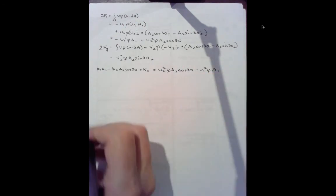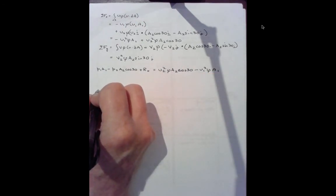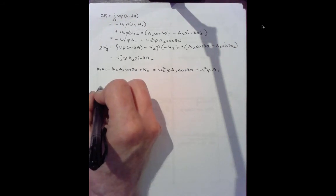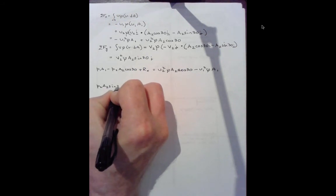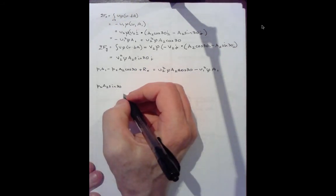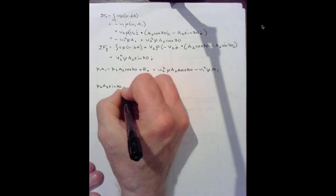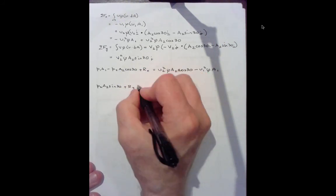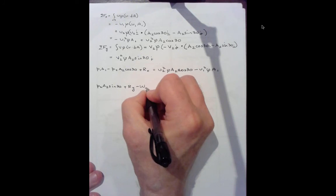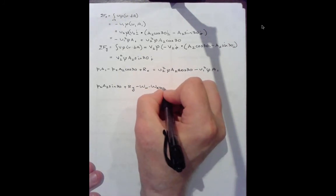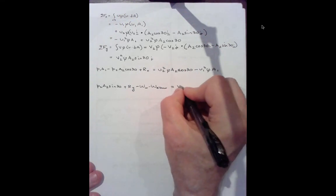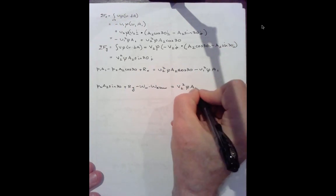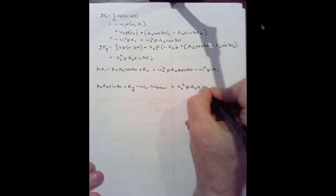The sum of the forces in the y direction is p2 a2 sine 30 plus the reaction force in the y direction minus the weight of water minus the weight of the elbow. That equals v2 squared rho a2 sine 30.